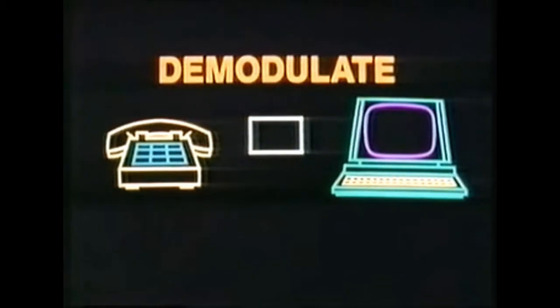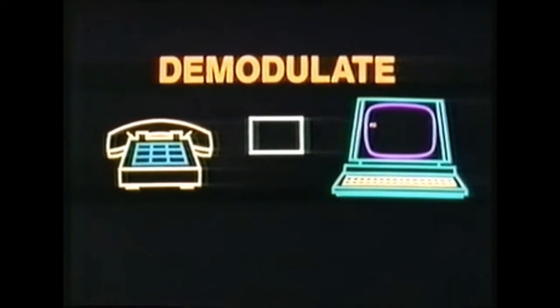But before that telephone can send your message along to a second computer, another sort of black box is needed to transform or demodulate telephone talk back into computer talk.